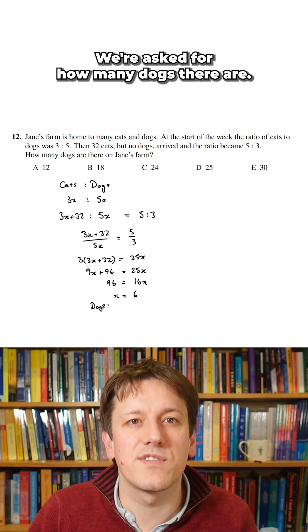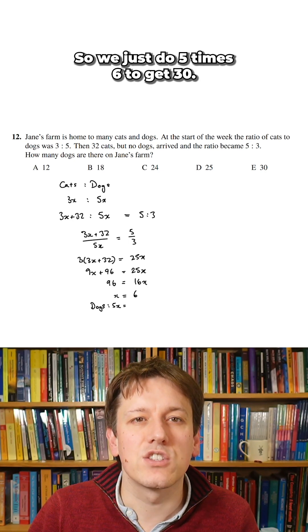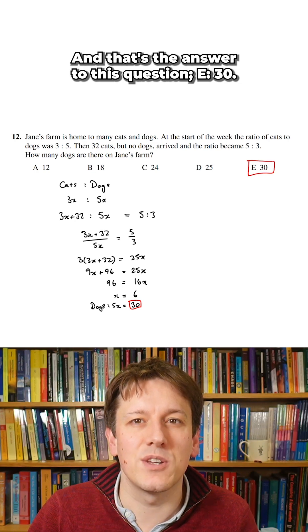Now that's not the answer to the question. We're asked for how many dogs there are. The number of dogs of course is 5x so we just do 5 times 6 to get 30 and that's the answer to this question E 30.